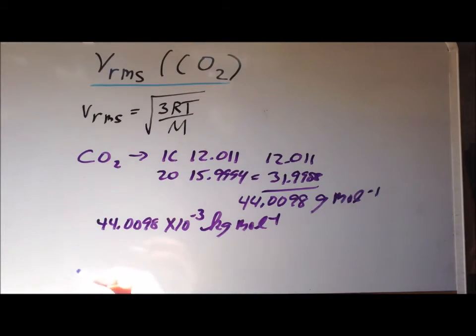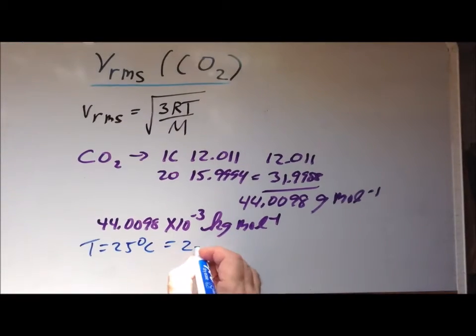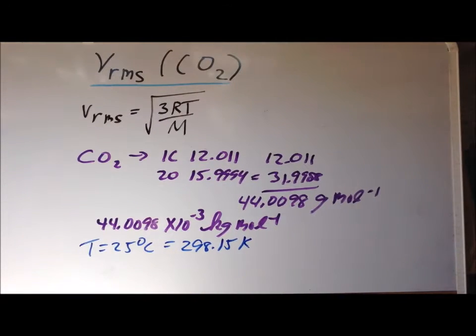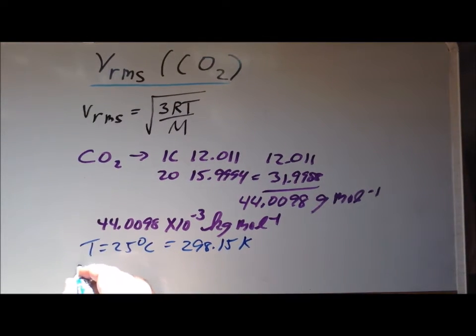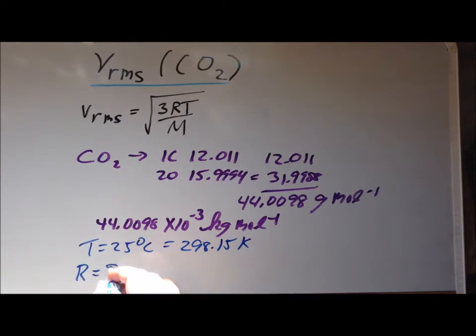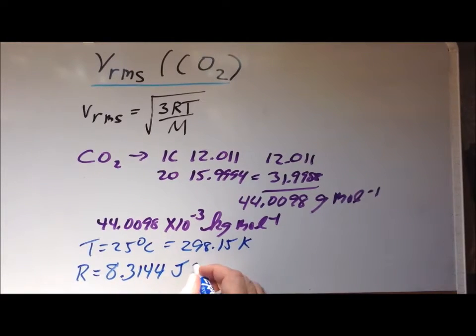We choose a temperature of 25 degrees centigrade, which is equal to 298.15 Kelvin. And last but not least, we are going to need the gas constant R. And the form of the constant that we need is 8.3144 joules per Kelvin per mole.